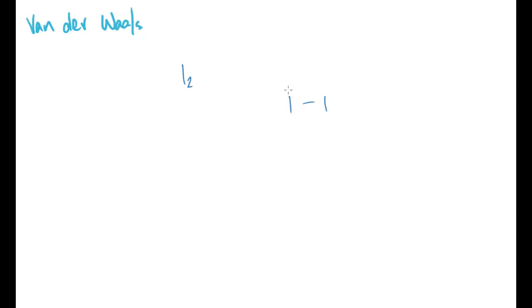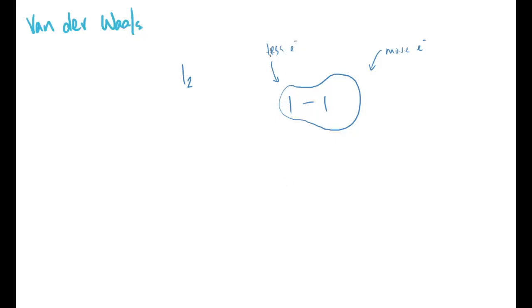If I look at the electron density around the molecule, I might find more electrons on one side than the other. This creates an induced dipole — the side with fewer electrons becomes delta positive, and the side with more electrons becomes delta negative. But these electrons are constantly moving, so no sooner has this formed than it flips, switching which end is delta positive and which is delta negative.